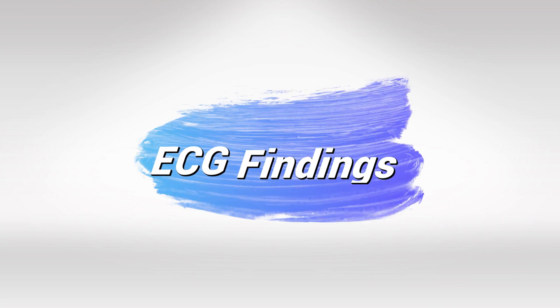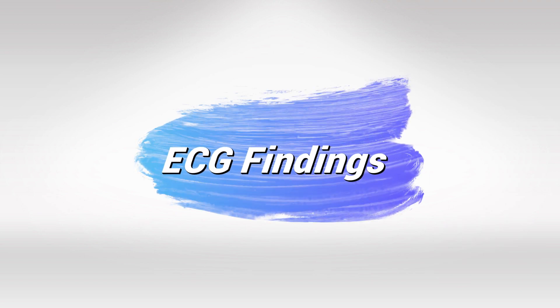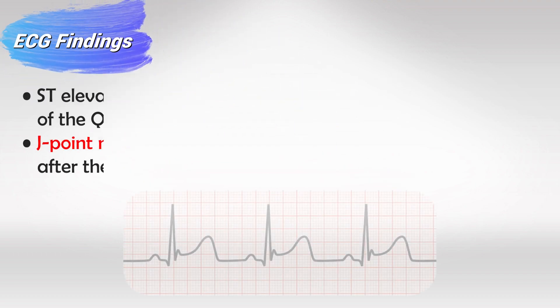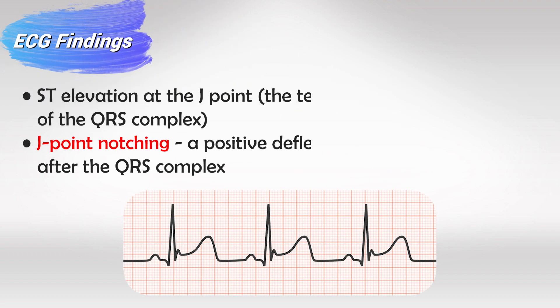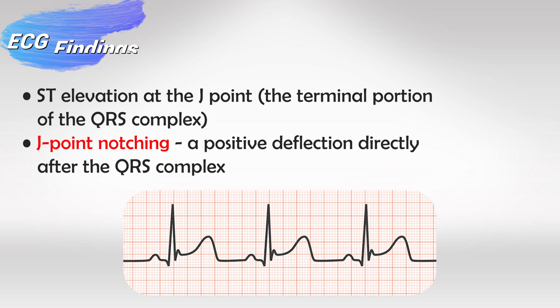On the ECG you'll see a characteristic elevation of the ST segment that occurs at the beginning of the ST segment, which is at the end of the QRS complex — this is known as the J-point, also referred to as J-point notching.